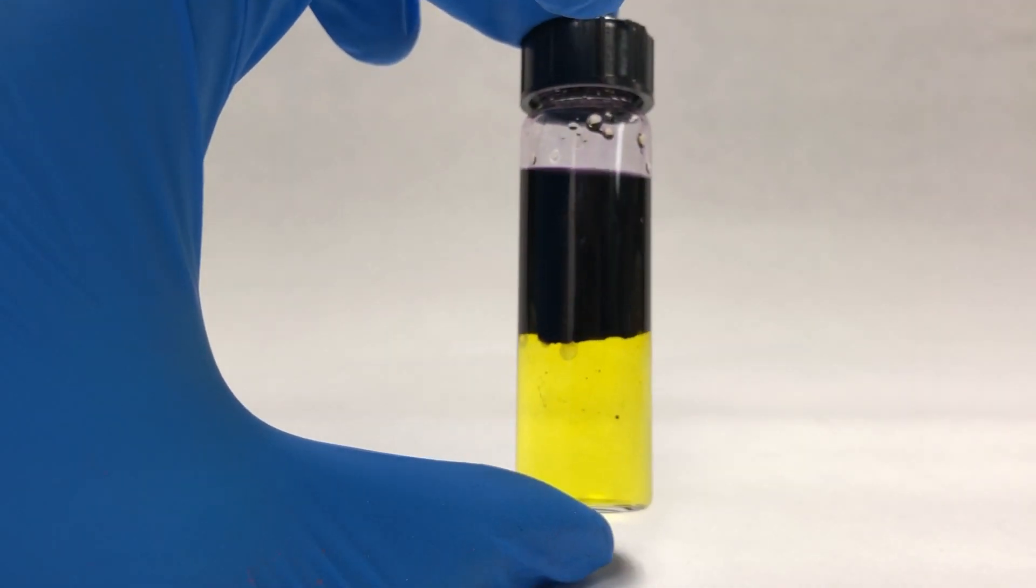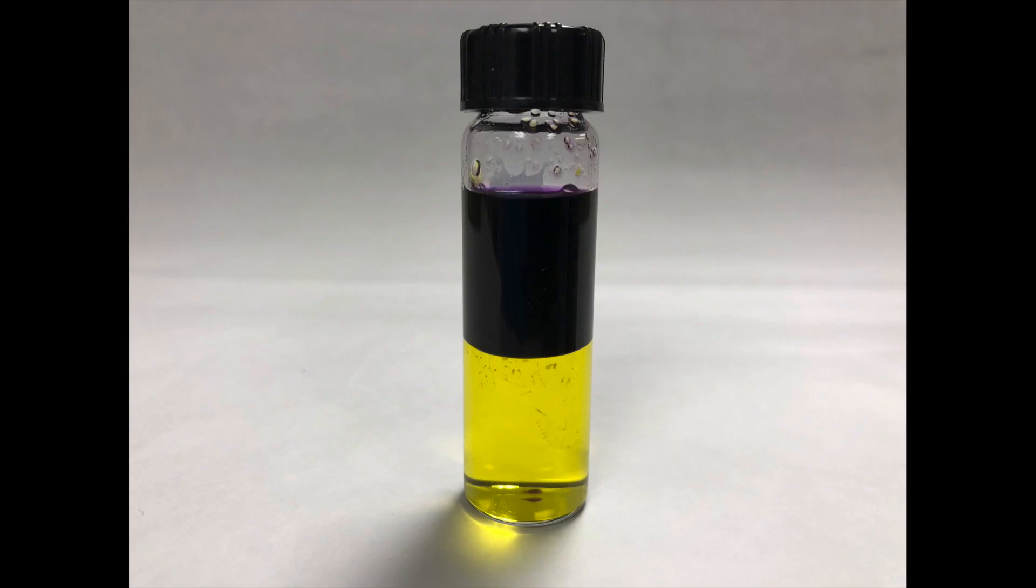Once it settles, you will notice that they have separated into their respective layers. The black solute dissolved in the solvent A layer, and the yellow solute dissolved in the solvent B layer.